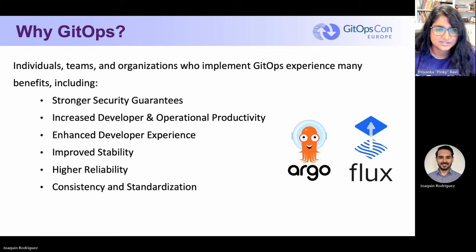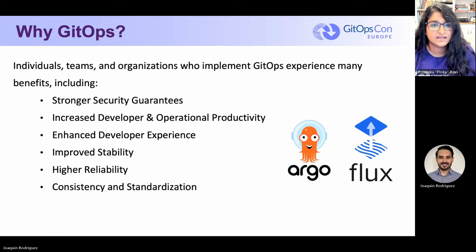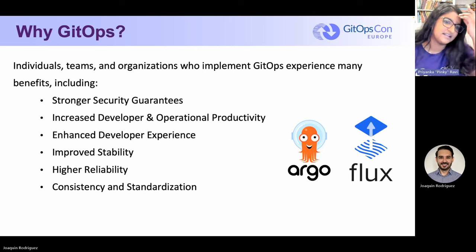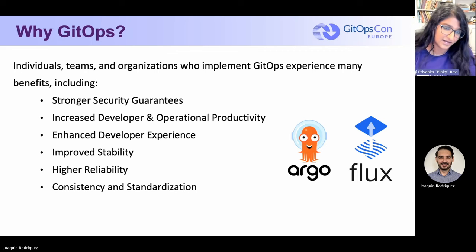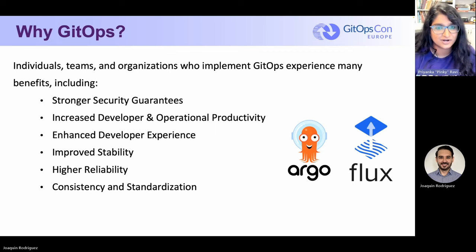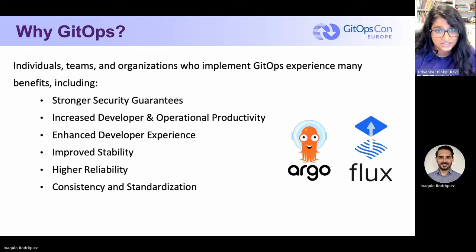This leads to increased developer and operational productivity. Developers can focus on things that actually matter to them, which enhances the developer experience. There's improved stability, higher reliability, and consistency and standardization. Within the GitOps space, there are two big giants you might have heard of: Argo and Flux. I'm going to dive a little bit into each before we go on to what Flamingo is.